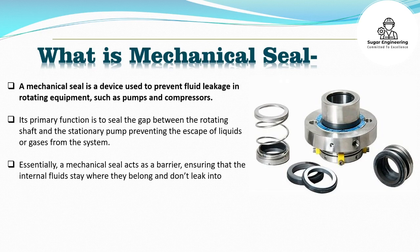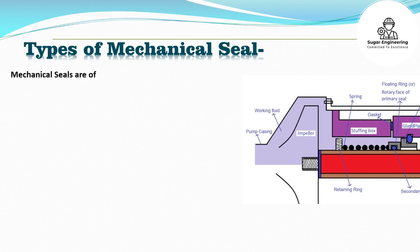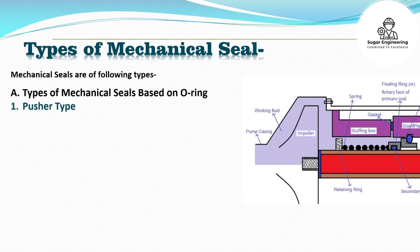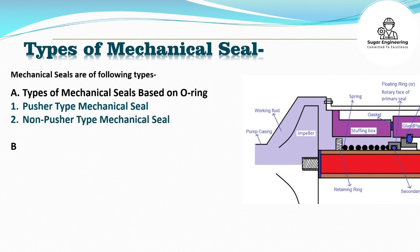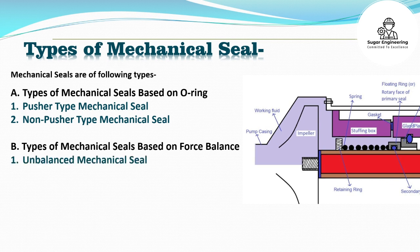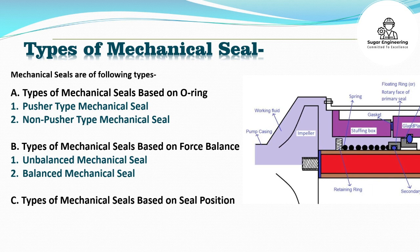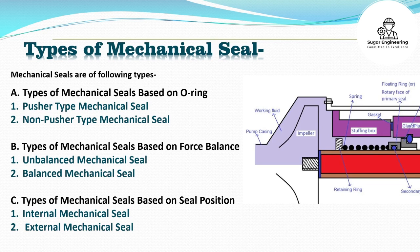Mechanical seals are of the following types. A: Types of mechanical seals based on O-ring — (1) Pusher type mechanical seal, (2) Non-pusher type mechanical seal. B: Types of mechanical seals based on force balance — (1) Unbalanced mechanical seal, (2) Balanced mechanical seal. C: Types of mechanical seals based on seal position — (1) Internal mechanical seal, (2) External mechanical seal.